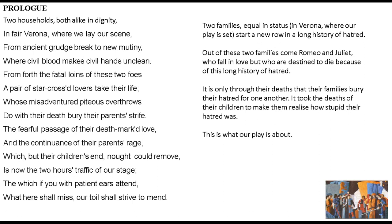So how can I summarise that prologue in plain language? Two families equal in status in Verona, where our play is set, start a new row in a long history of hatred. Out of these two families come Romeo and Juliet, who fall in love but are destined to die because of this long history of hatred. It is only through their deaths that their families bury their hatred for one another — it took the deaths of their children to make them realise how stupid their hatred was. And that is what our play is about.